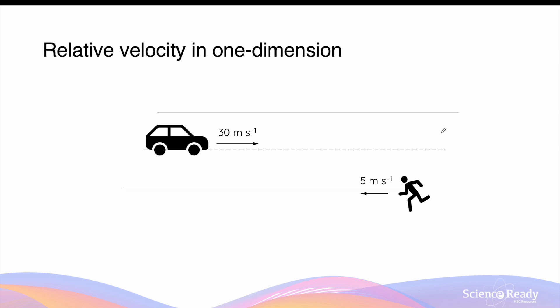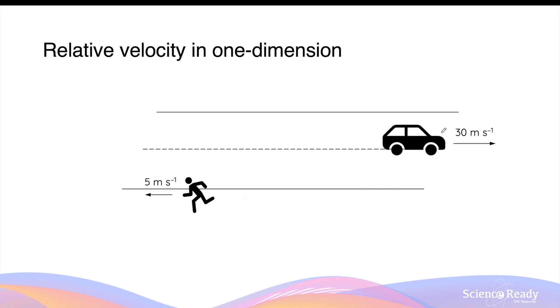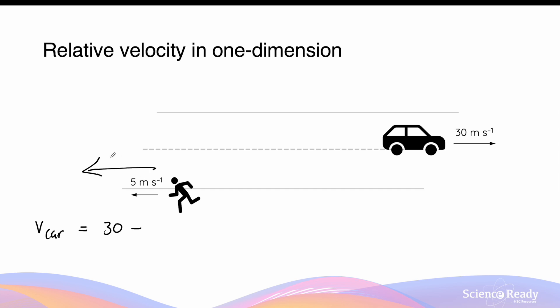Now what happens if the runner is running at 5 meters per second, but this time in the opposite direction to the car? The velocity of the car relative to the person is still 30 meters per second minus the velocity of the runner. But now the velocity of the runner is heading towards the left, which is in the negative direction, so this will be negative 5. This gives us a relative velocity of the car of 35 meters per second to the right.